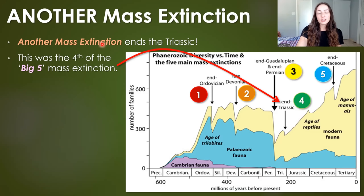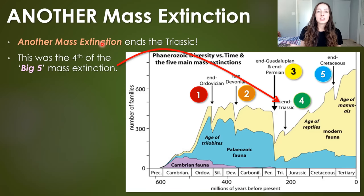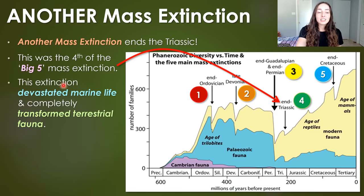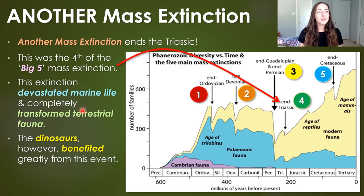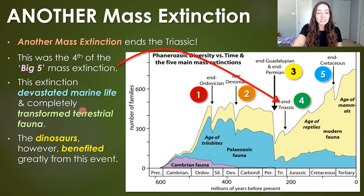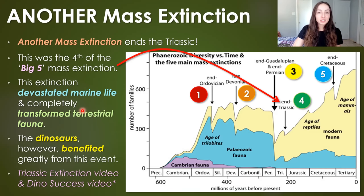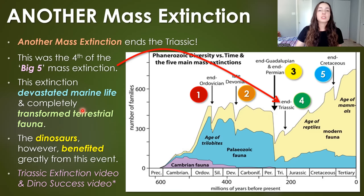We also had a mass extinction at the Triassic-Jurassic boundary — the fourth of the big five mass extinctions of the Phanerozoic Eon. This extinction devastated marine life, but it completely transformed terrestrial fauna. Dinosaurs benefited from this event because their competitors, the therapsids, were completely devastated, so dinosaurs took over pretty much every land niche after that. I talk about that in the Triassic mass extinction video, as well as a separate video on reasons for dinosaur success and common dinosaur misconceptions.